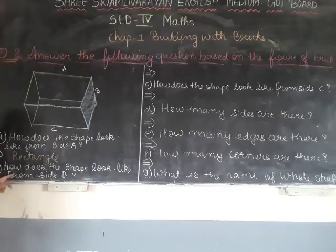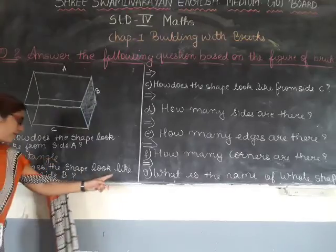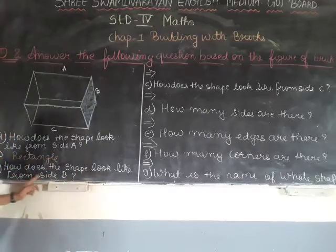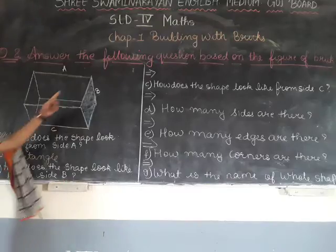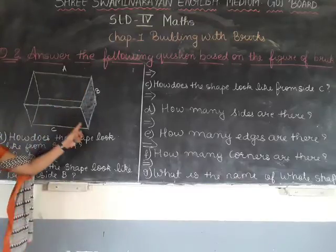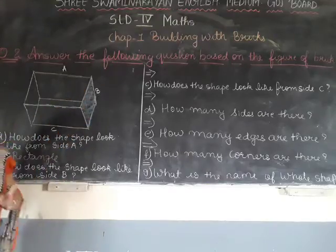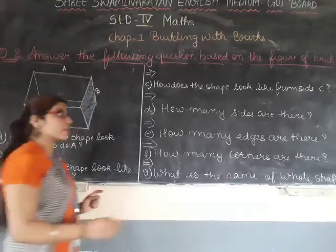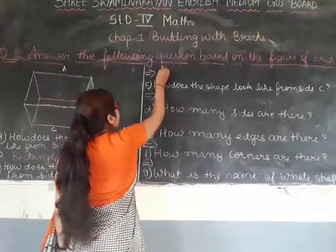How does the shape look like from side B? You can see side B — it also looks like a rectangle.